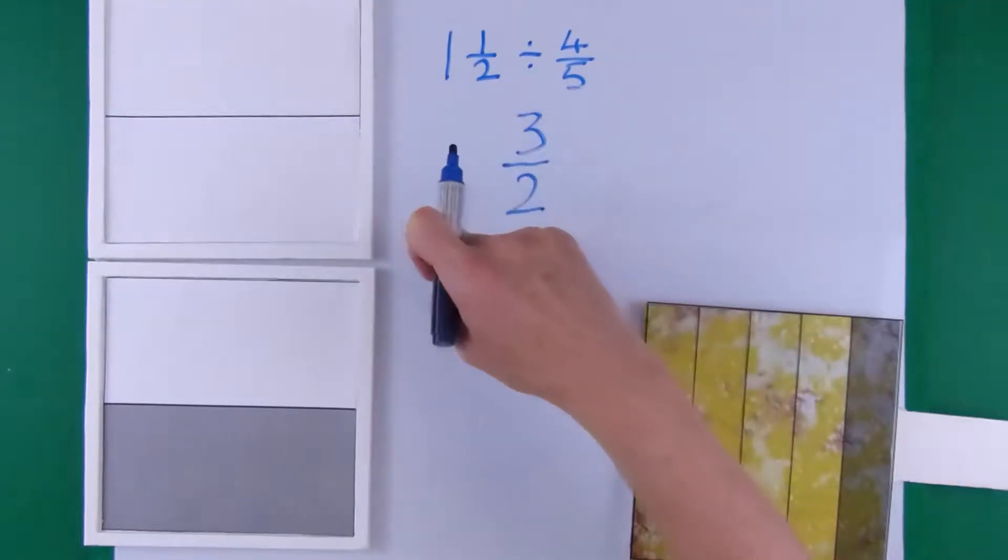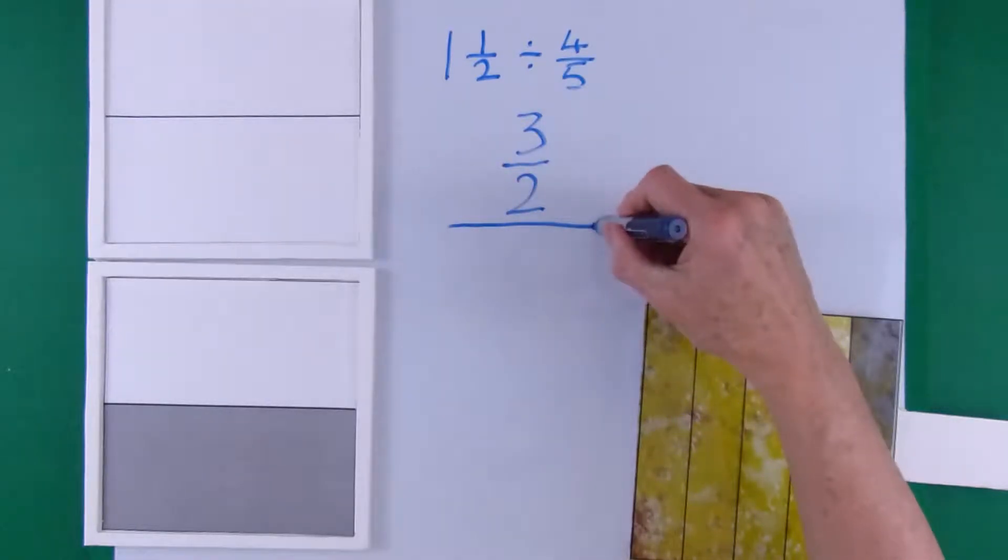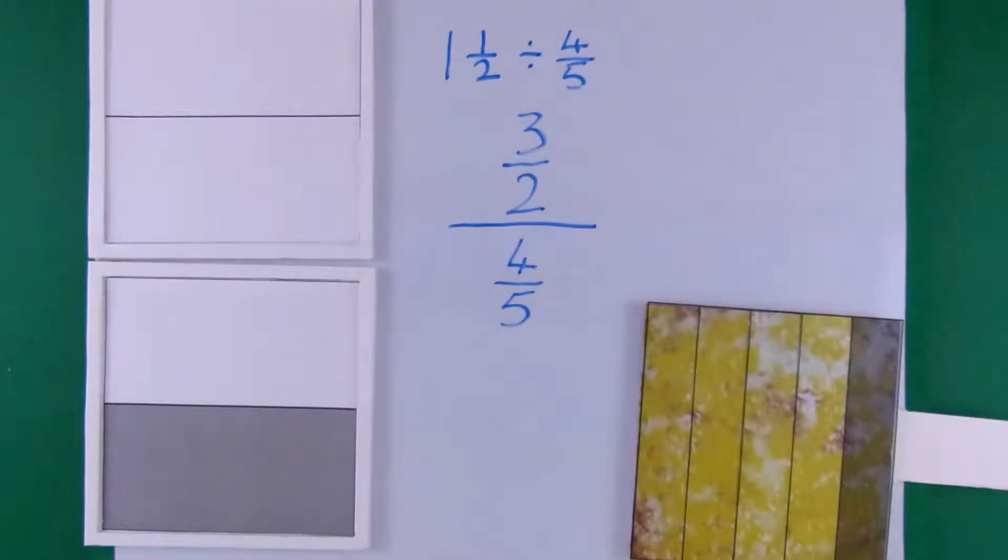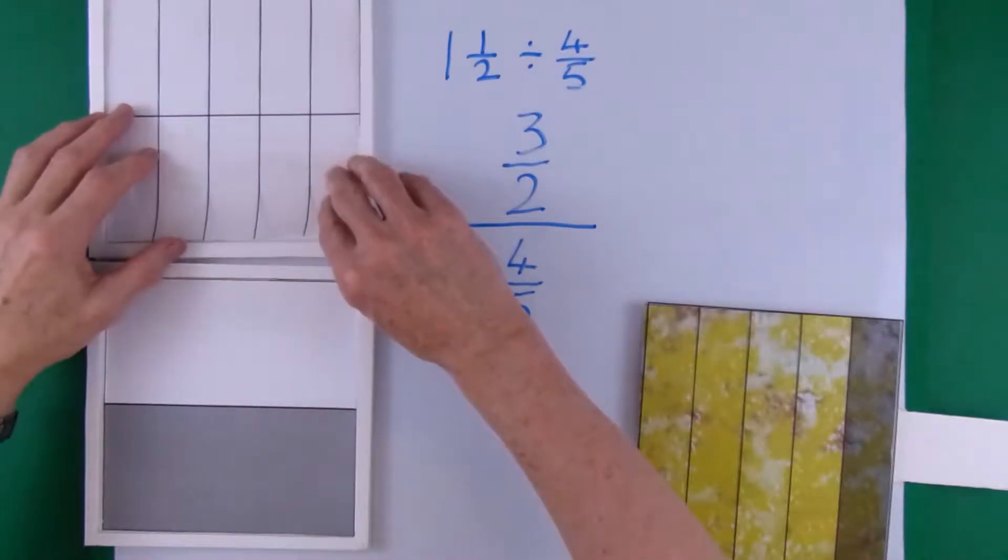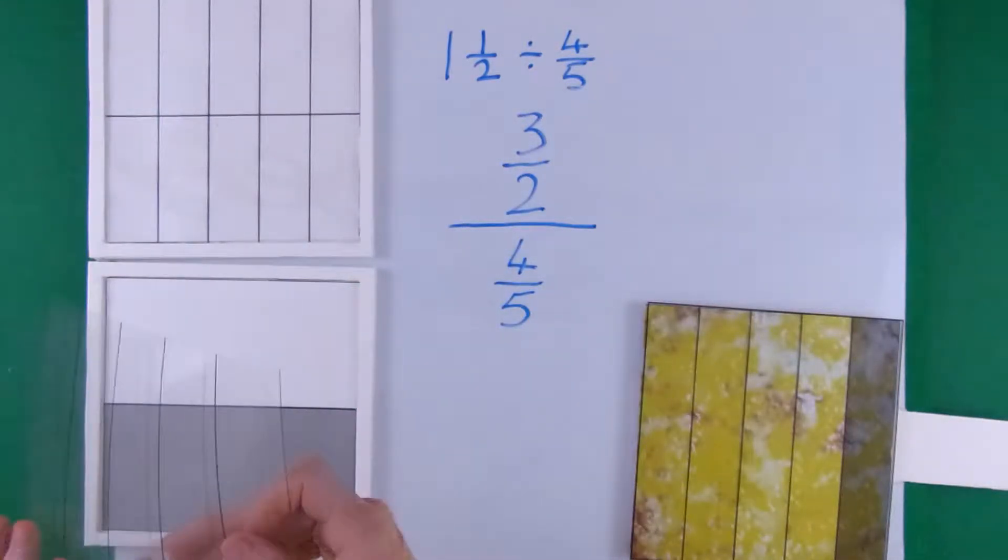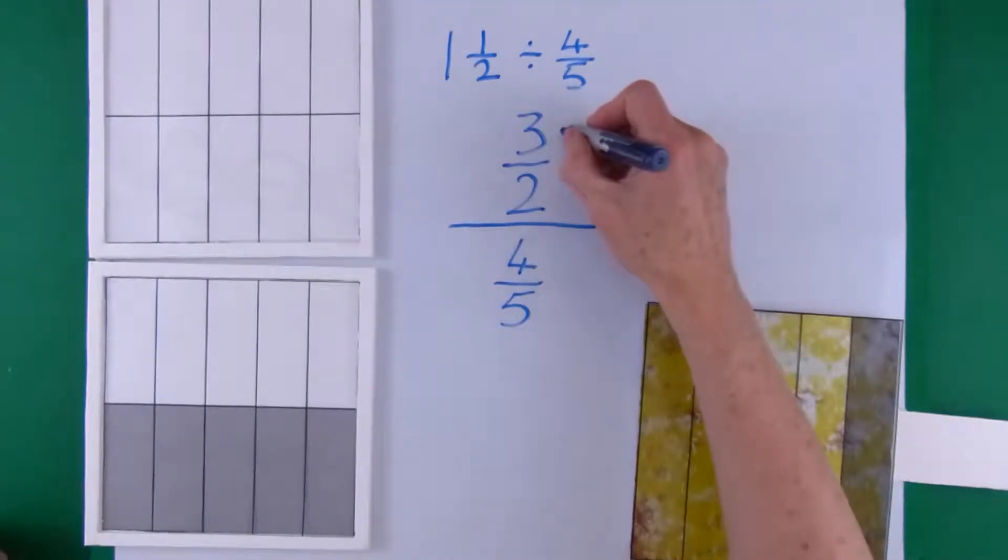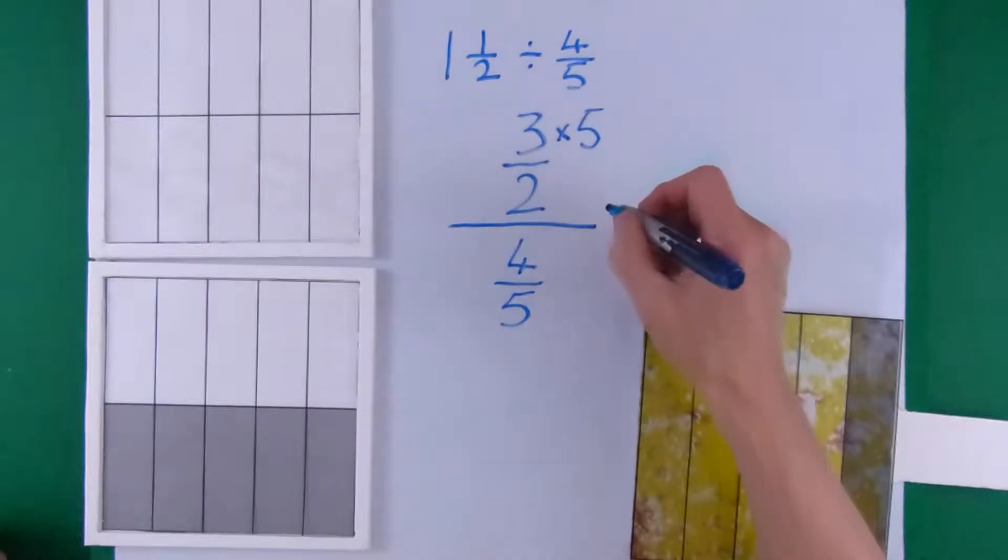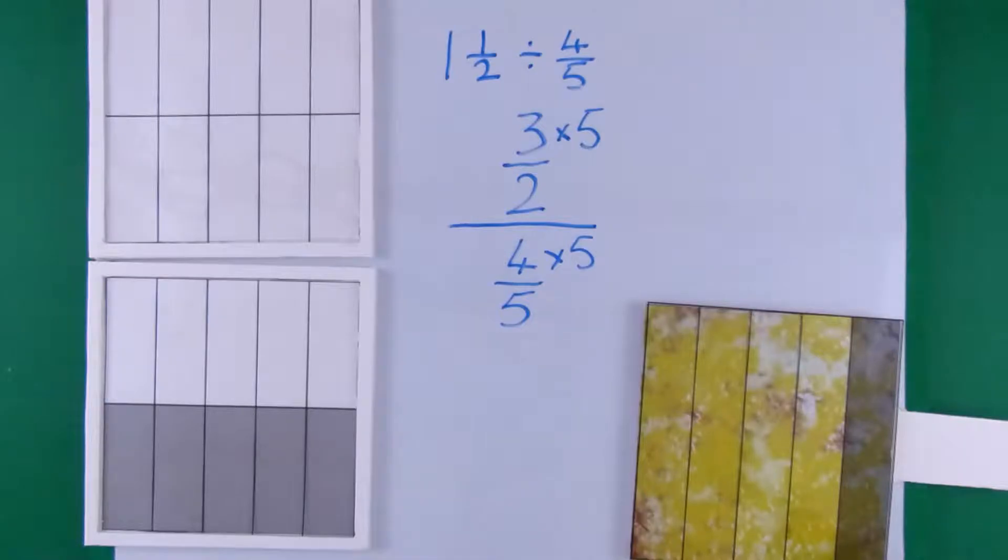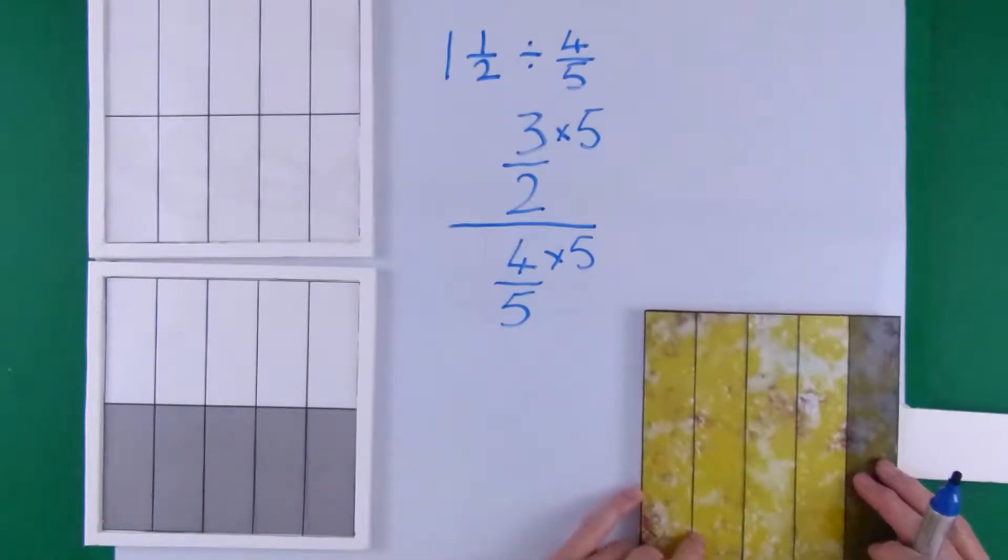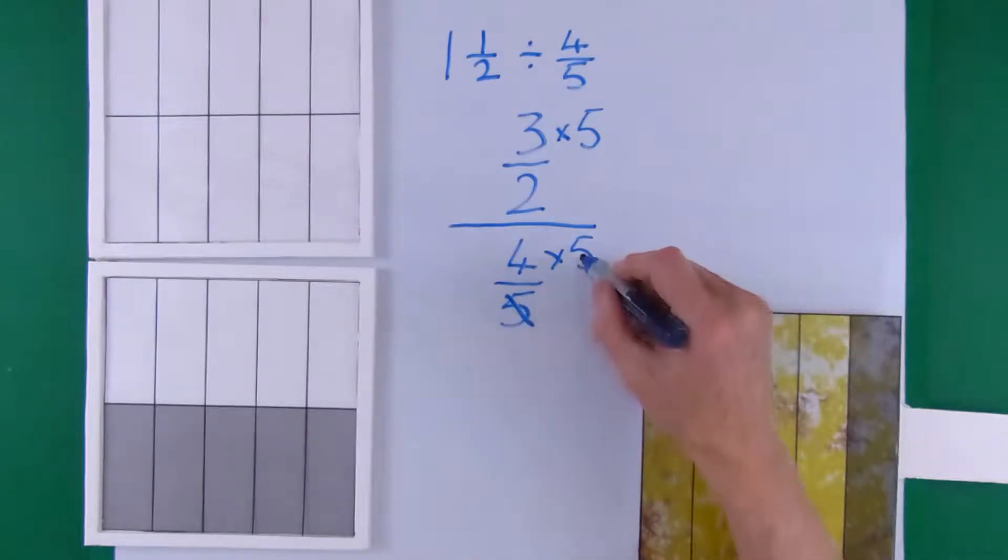We're going to write the divide in the other forms with 3 over 2 over 4 fifths. The 4 fifths pizzas were out of 5 pieces. So I split the 3 halves in 5 pieces to make the pieces similar. We're multiplying the top number and the bottom number by 5. The 4 fifths pizza already has 4 pieces and that's why the 5's cancel.